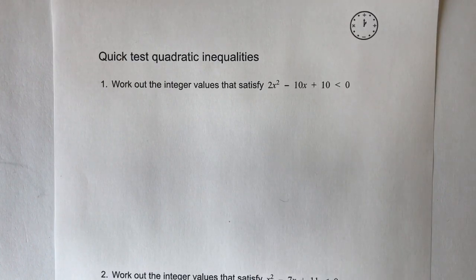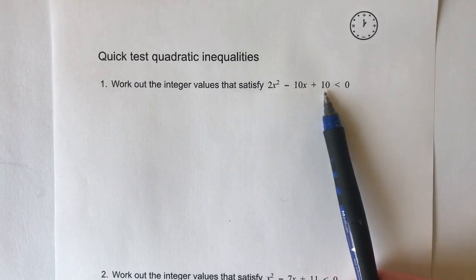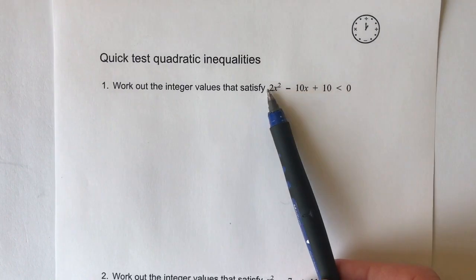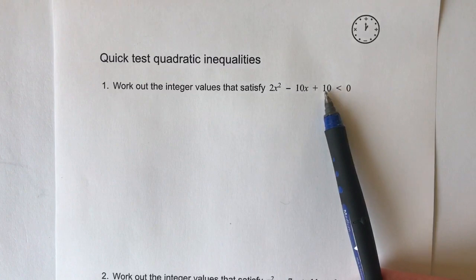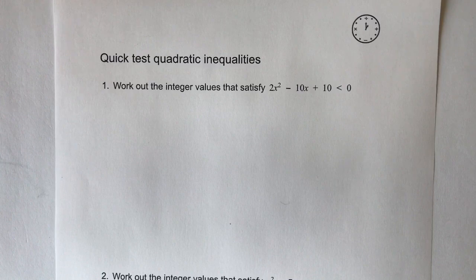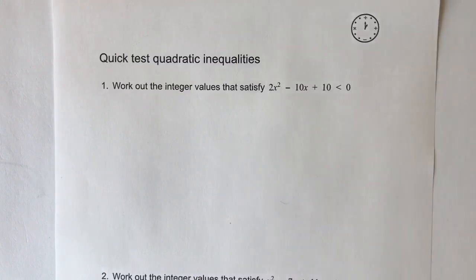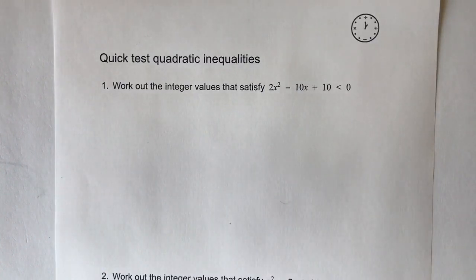With this one, what you have to remember is that we can't really factorise it, because if I do 2 times plus 10 I'm going to get plus 20, and then there's no two numbers that when I multiply them together will make plus 20 and when I add them together will make minus 10. So that's one of the clues that you've got to recognise — this won't factorise, at least not traditionally anyway.